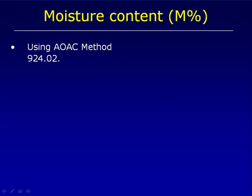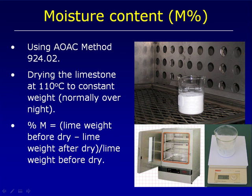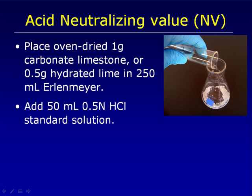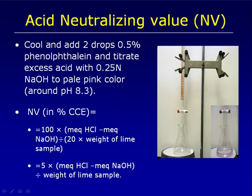To measure moisture content, we use an AOAC method where we oven dry the limestone and calculate the percentage of moisture based on the initial and the final dried weight. For the acid neutralizing value, we also use the standard AOAC method. We have certain reagents that need to be prepared or purchased. We acid react the limestone, and then we back titrate with sodium hydroxide to calculate the acidity of that limestone source compared with pure calcium carbonate.